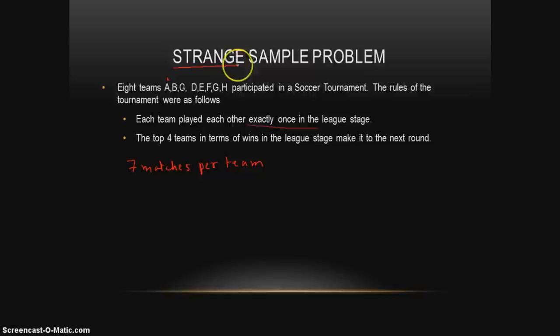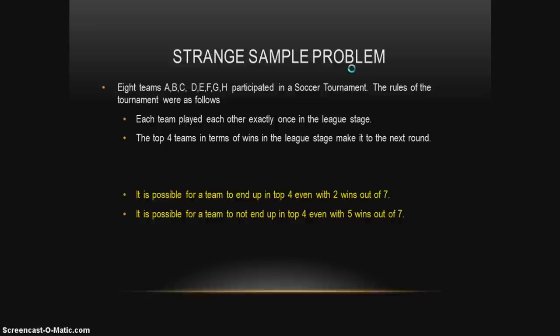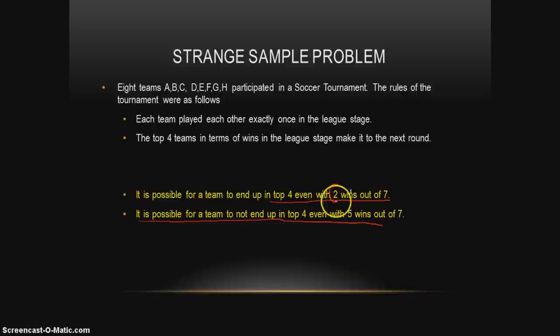Now mark one thing — this is a strange sample problem. With these rules, it is possible for a team to end up in the top 4 even with just 2 wins out of 7. On the other hand, it is possible for a team to not end up in the top 4 even with 5 wins out of 7.